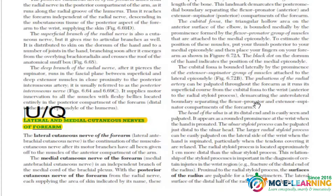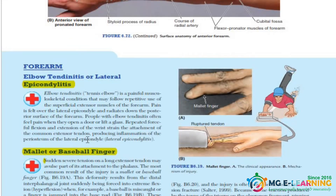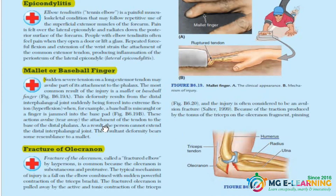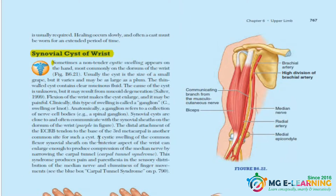Then we have the lateral and medial cutaneous nerve of the forearm — this is a famous UQ. Moving forward, on the clinicals of the forearm: epicondylitis, medial or lateral, is a very important clinical. Then we have mallet finger or baseball finger — again important. Fracture of olecranon — you should know it. And then we have synovial cyst of the wrist.